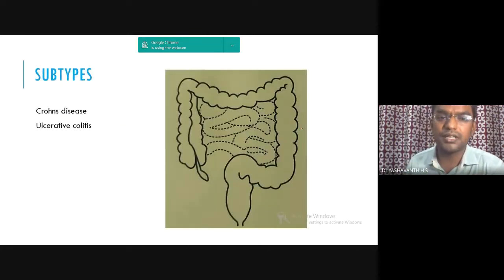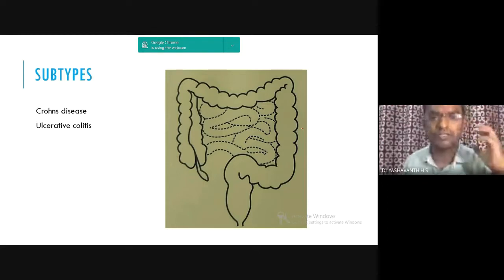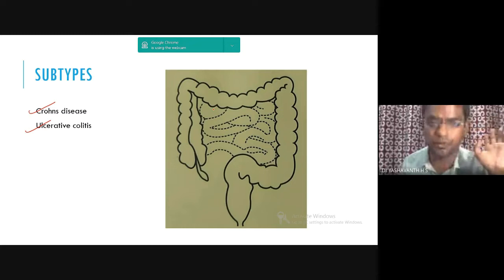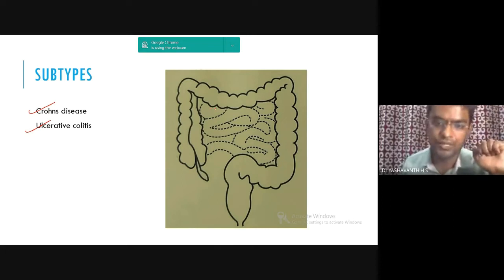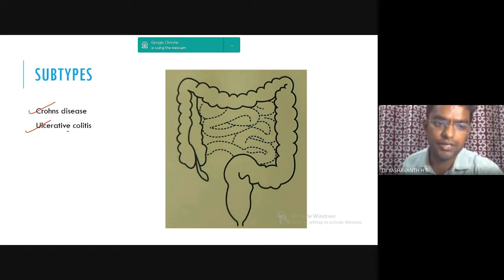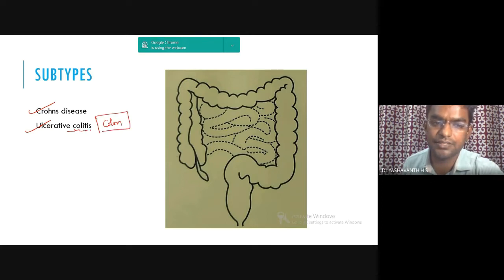What are the subtypes? There are multiple subtypes, but the two most common are Crohn's disease and ulcerative colitis — there is also microscopic colitis and non-specific colitis, but we won't deal with those. To start with the simpler one: ulcerative colitis. Colitis means inflammation of the colon, which is the large intestine. So it is a chronic inflammatory disease involving the large intestine where you see innumerable ulcers.